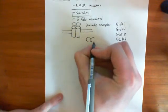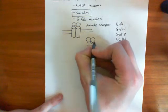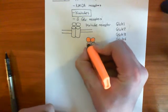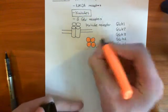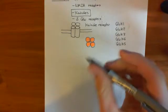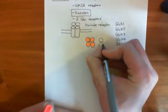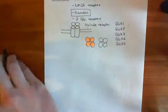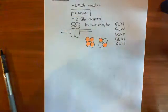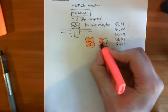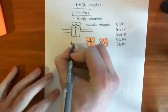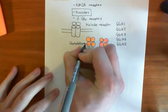Homotetramers consist of four of the same subunits all together — all coded for by the same gene, the same polypeptide. I'll colour them to show they're all the same. A heterotetramer has two subunits coded for by one gene and the other two coded for by another gene. So this orange one is a homotetramer, and that mixed one is a heterotetramer.